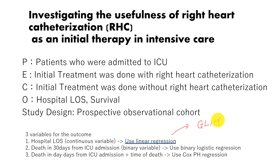The second variable is death in 30 days from ICU admission, which is a binary variable. Usually we use binary logistic regression, and we are going to use a generalized linear model to do the binary logistic regression for the same reason. The third is death in 30 days from ICU admission plus time of death, for which we use Cox proportional hazard regression. In EZR, Cox PH regression allows us to specify weighting options, so we use the regular Cox regression for this.